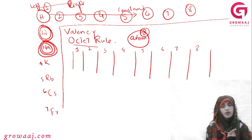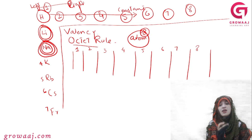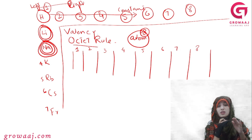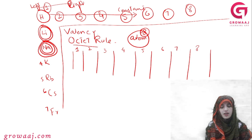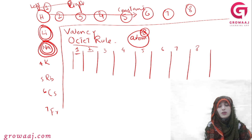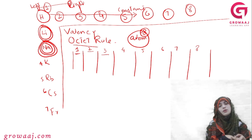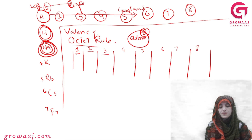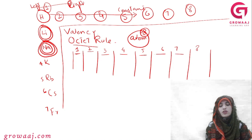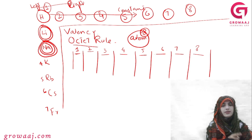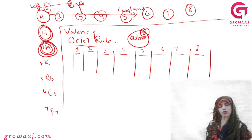We talked about valence electrons — the first group will have 1 valence electron, the second group will have 2 electrons, and the third group will have 3 electrons. In the 4th group there are 4 electrons, 5th group has 5 electrons, 6th group has 6 electrons. There are 8 electrons for the noble gases — except helium which has a duplet — and for them the octet is complete.